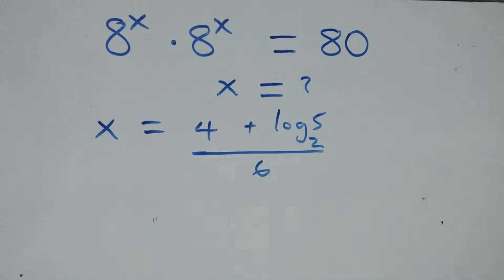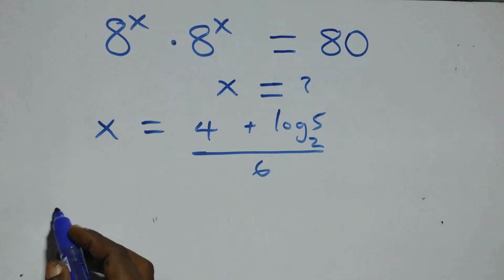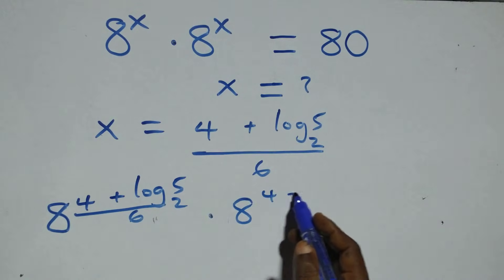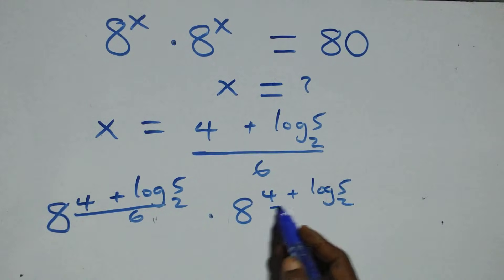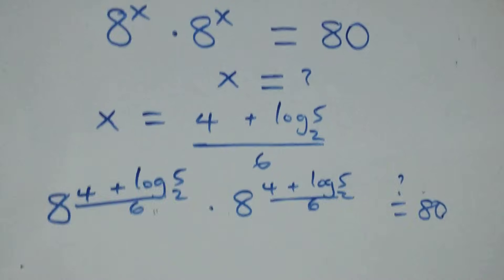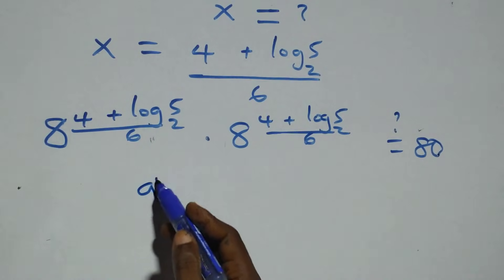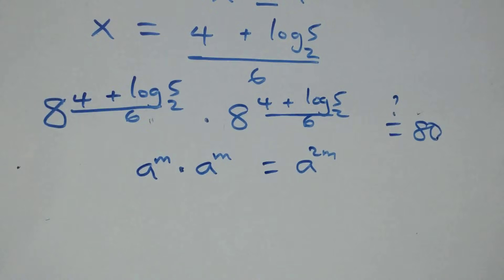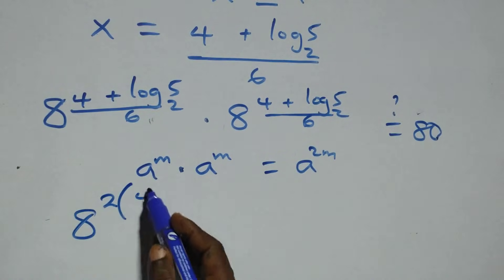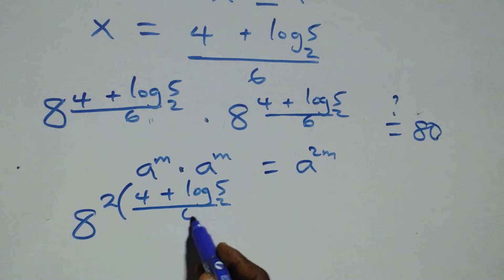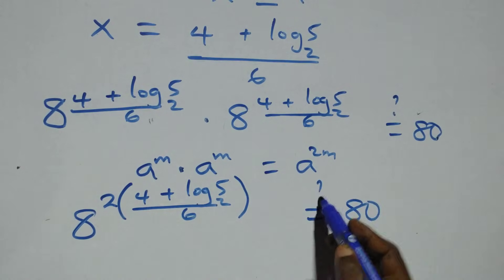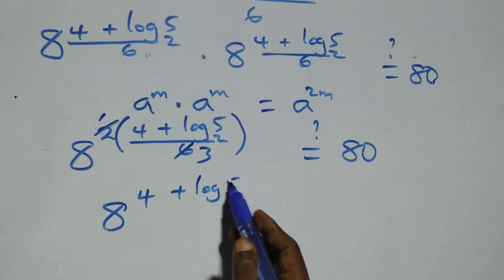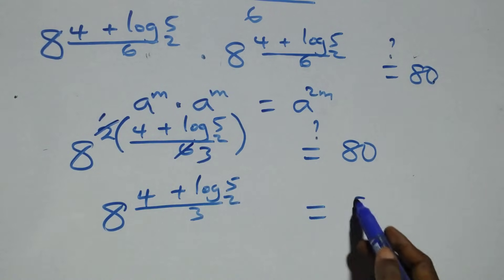What we have becomes 8 raised to the power (4 plus log₂5) over 6, times 8 raised to the power (4 plus log₂5) over 6, and this equals to 80. When we have the same base multiplying — a raised to power m times a raised to power m — that's the same as a raised to power 2m. So we write it as 8 raised to the power 2 times (4 plus log₂5) over 6, which simplifies to 8 raised to the power (4 plus log₂5) over 3. Is this equal to 80?